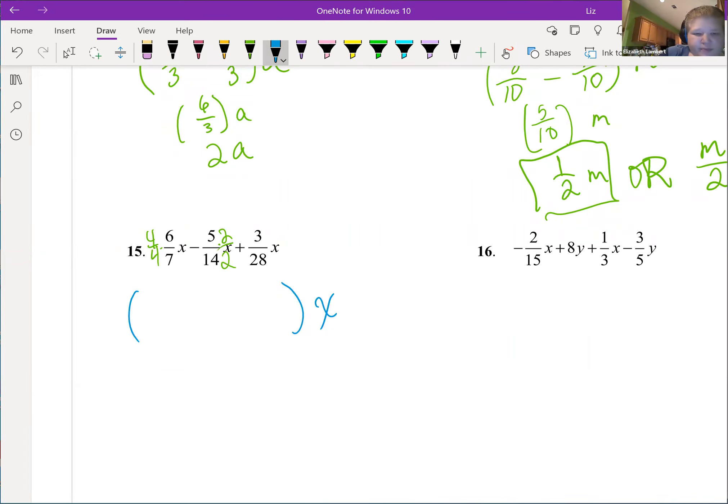So that is 24 28ths minus 10 28ths plus 3 28ths. Addition and subtraction, do them in the order they appear, so we are going to subtract before we add. So 24 28ths minus 10 28ths.